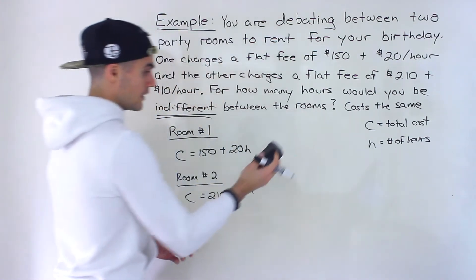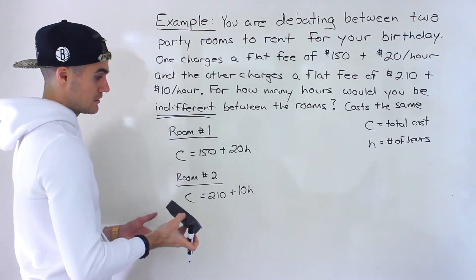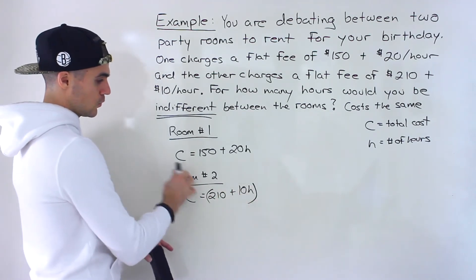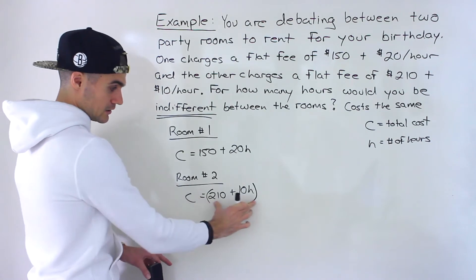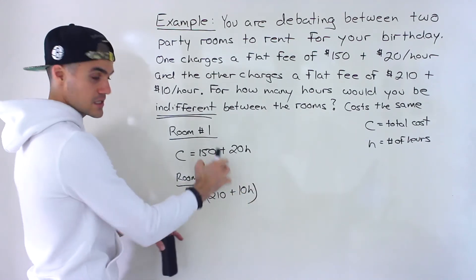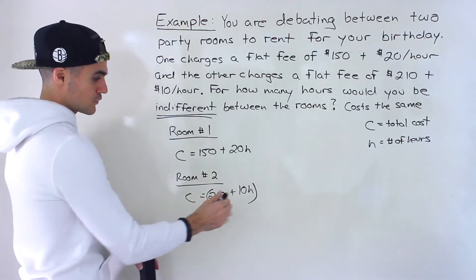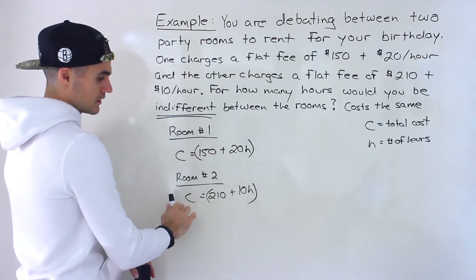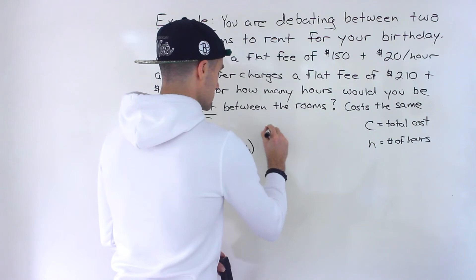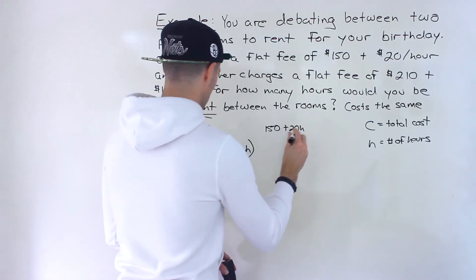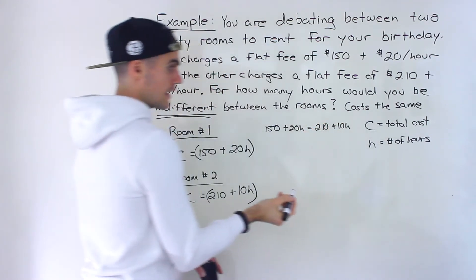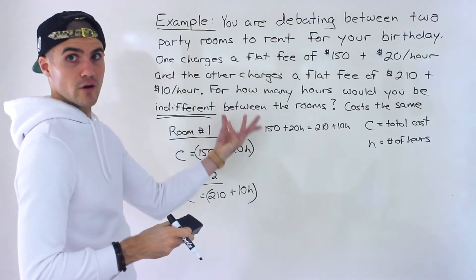Now we're trying to figure out when are both costs going to be the same. So what we can do is we just use substitution. We could plug in this for this c. When is this cost equal to this cost? So we can make just both of those equal. And then we're going to have one variable to solve for. So it doesn't matter which you put on which side. I'll write 150 plus 20h is equal to 210 plus 10h. And notice now we have an equation with one variable to solve for.